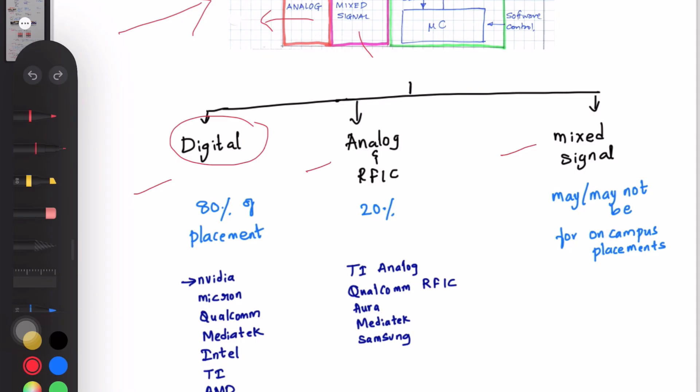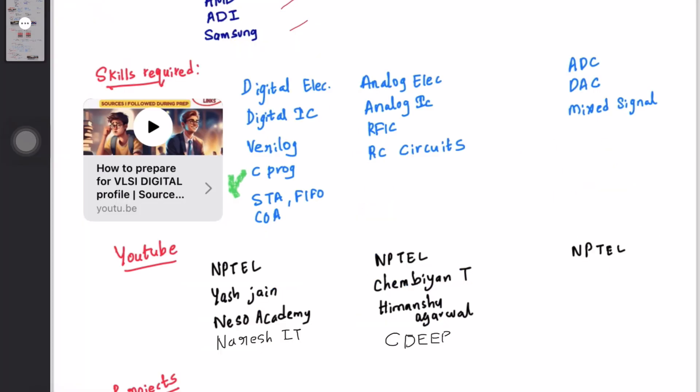You can check with your placement stats or off-campus hires if you are targeting specific roles like mixed signal. Some of the companies which come for hiring digital VLSI roles are NVIDIA, Micron, Qualcomm, MediaTek, Intel, TI, AMD, ADI, Samsung. These are some of the companies. And for analog: TI Analog, Qualcomm RFIC, or MediaTek, Samsung.